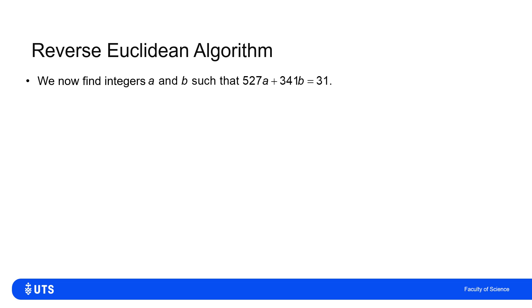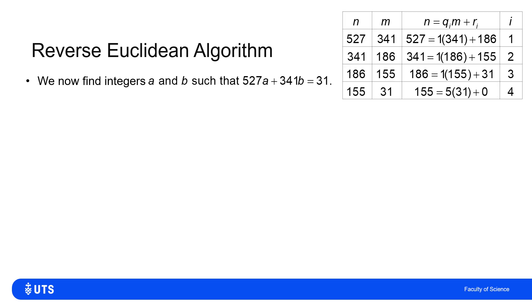We'll now choose the example from the first slide to find integers a and b such that 527a plus 341b gives me 31. These were the four steps of my Euclidean algorithm to show that the greatest common divisor was 31.